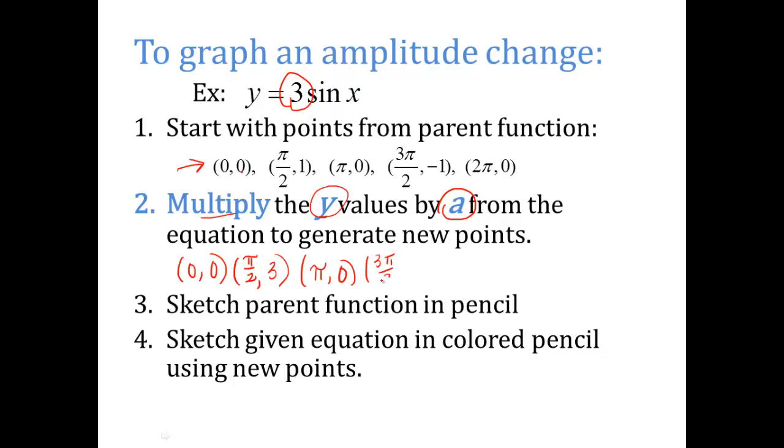And 3π/2, negative 1 times 3 makes it negative 3. And then 2π is the same, 0 times 3 is still 0. So these are the new points I'm going to plot on my graph. Now, you're going to sketch the parent function in pencil today, and I'll do that on the following example. And then you're going to put your new equation in a colored pencil so you can see the amplitude change.